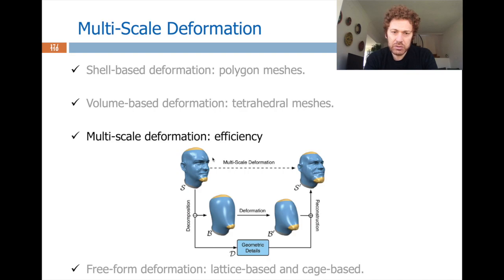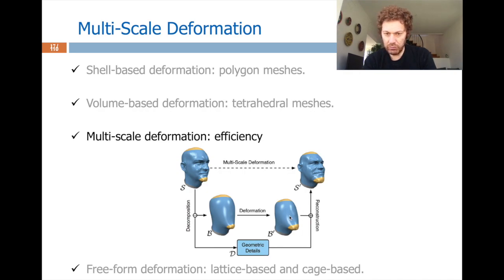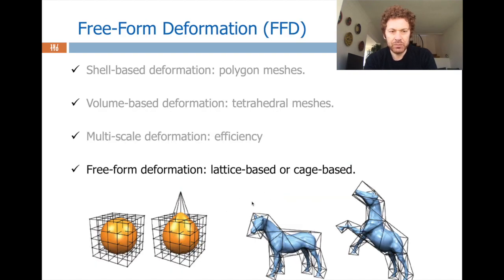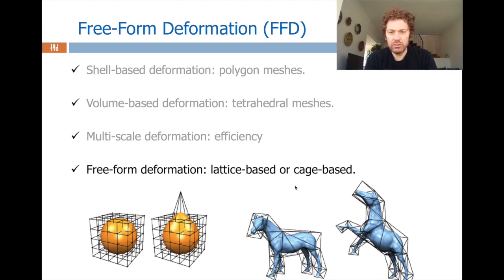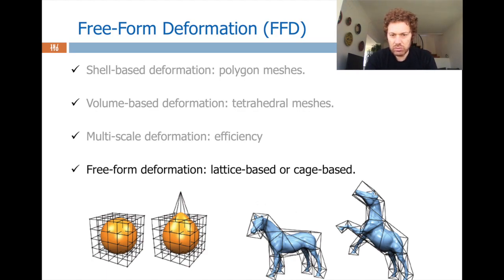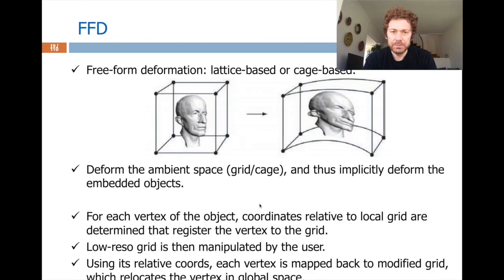Another paradigm is multi-scale deformation, where you decompose the input into a base part and high-frequency geometric details, deform the base model, and then add the geometric details back onto the deformed model. Another popular approach is free-form deformation (FFD). In addition to the input mesh — say, a horse — you place a lattice or cage around it. The lattice is low-resolution and easy to handle.